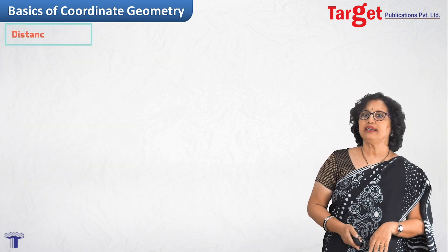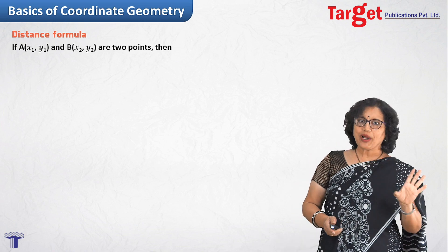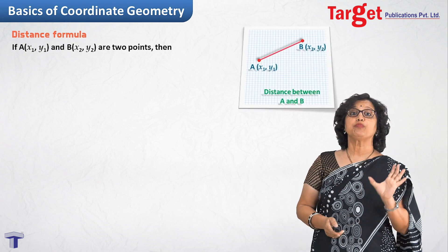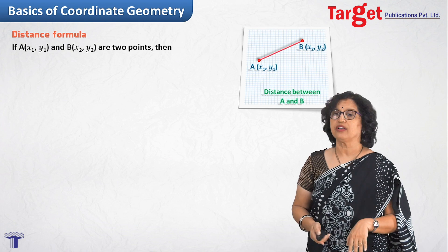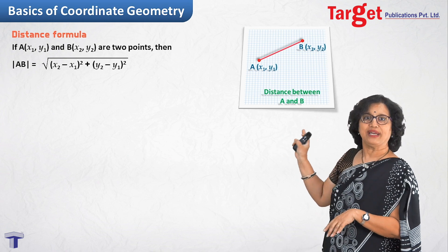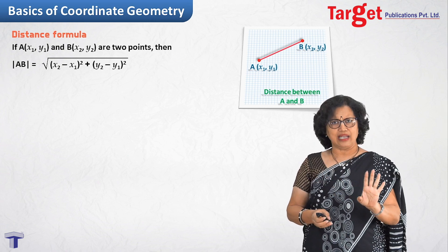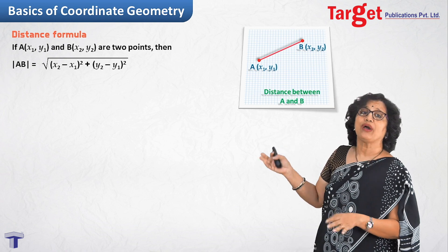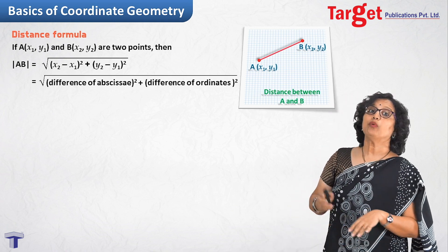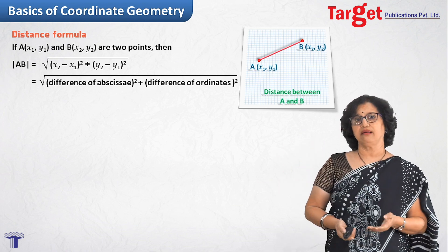Now let us go to standard formulae. The first is the distance formula. Given two points A(X₁, Y₁) and B(X₂, Y₂), the distance AB is √[(X₂ − X₁)² + (Y₂ − Y₁)²]. It does not matter which point you label as (X₁, Y₁) since you are squaring the differences. You can remember it as: square root of the sum of the square of the difference of ordinates and the square of the difference of abscissas.